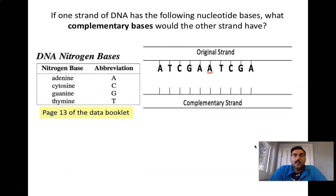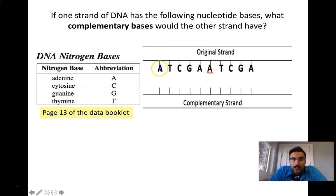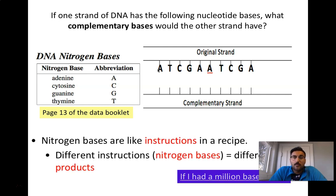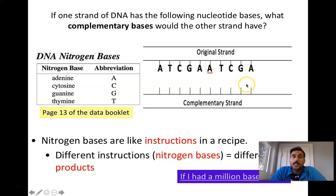If one strand of DNA has the following nucleotide bases, what complementary base would the other strand have? A always binds to T, C to G, and vice versa, so it's always the opposite. The complementary strand would read: T, A, G, C, T, T, A, G, C, T.